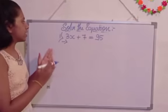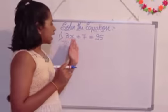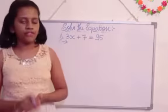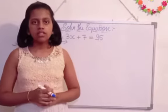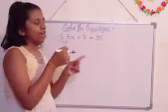So here is the first question. That's 3x plus 7 is equal to 95. So here the value or the variable called x there. So we are going to find the value of x.